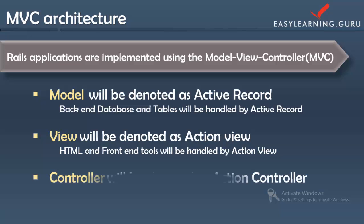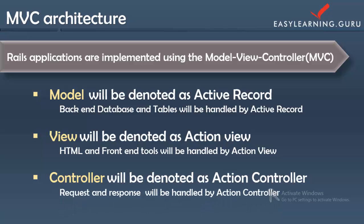C stands for Controller, also denoted as Action Controller. Basically, it processes and responds to user events such as clicking on links and submitting forms. The controller will make decisions based on the request and then controls what happens in response. It controls the interaction with our models and with our views.